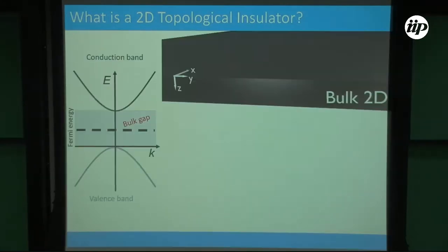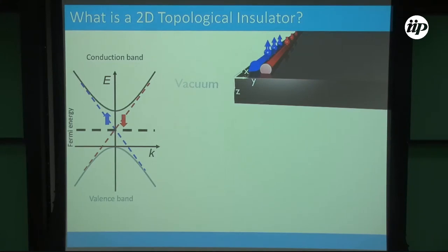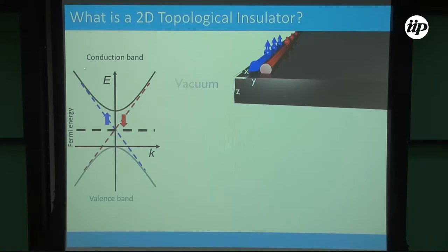What is a topological insulator? That's the bulk 2D system — you have a gap there, it's an infinite system in all directions. Now imagine you cut the system in half. A topological insulator is a system in which the bulk is an insulator, and on the physical edges of the system there are actually edge states. With a concrete example, this is just a solution of the Schrödinger equation. You have the bulk bands separated by a gap, but right at the interface you have linearly dispersing modes that are metallic, because it's gapless.